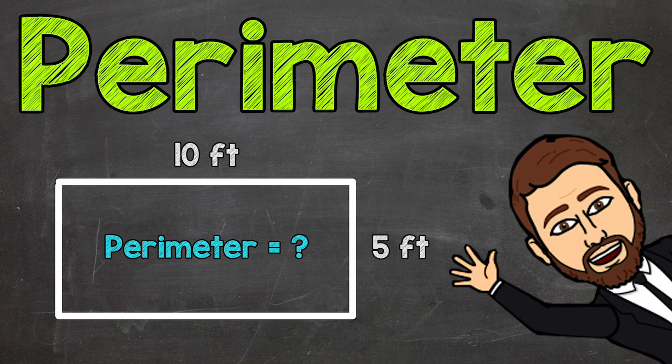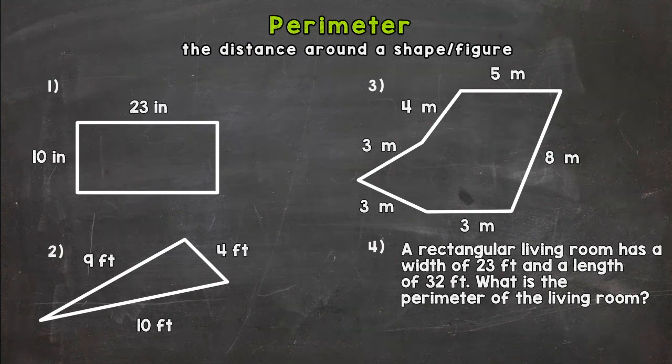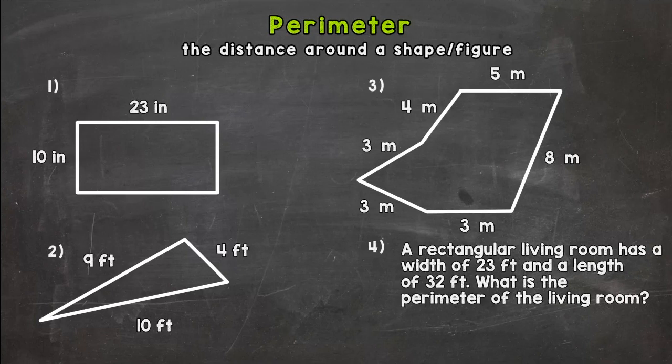Welcome to Perimeter with Mr. J. In this video we are going to be discussing what perimeter means and then also how we calculate perimeter. At the top of your screen it says the distance around a shape or a figure and that's what perimeter is. And in order to calculate the perimeter of something all you need to do is add up all of the sides.